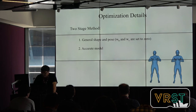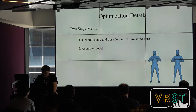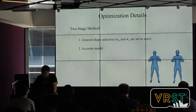Now we briefly review the optimization process. This process is divided into two stages. First, we recover the general shape and pose. In this stage, W-H and W-C are set to zero. In the second stage, we compute the accurate model. Please refer to our paper for more details on how to set the parameters.